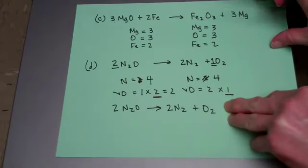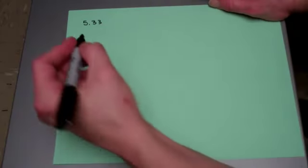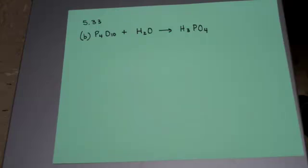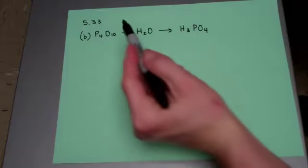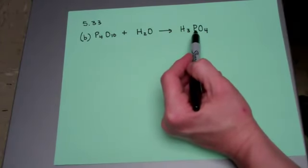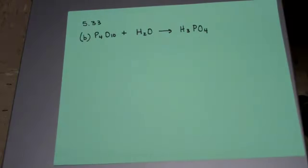So the balanced equation is: 2N₂O yields 2N₂ + O₂. That's problem 5.31. Now let's do a few from question 5.33. I'm going to choose B so we see another problem worked with water. This reaction is a synthesis reaction — taking two things and combining them into a single product — the A + B → C format.